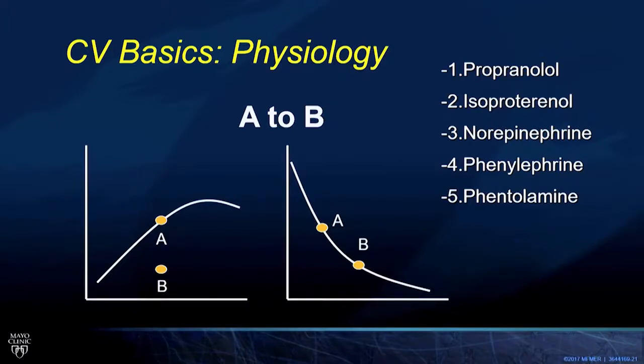And of those drug choices, option four, phenylephrine, is a pure vasoconstrictor, increasing afterload, and therefore decreasing stroke volume. So that's the correct answer to that one.